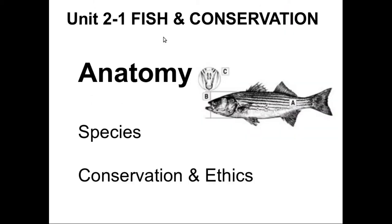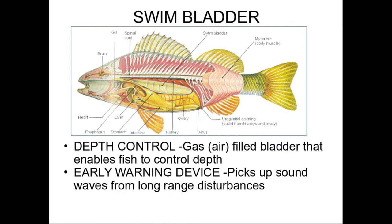We're going to start off by talking about fish and conservation and we'll begin with fish anatomy. If you remember from the last unit, we talked about the swim bladder and how it's unique to fish, how fish use a swim bladder to control depth. They can deflate the bladder to reduce their volume and become more dense, therefore sink, or inflate the bladder, gain volume, gain more buoyancy and therefore come up to the surface.